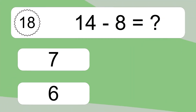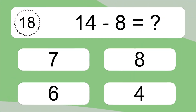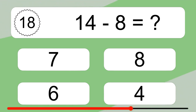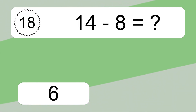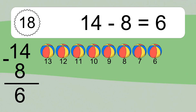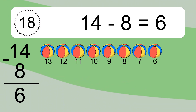14 minus 8 equals what? 14 minus 8 equals 6. Let's count it: 13, 12, 11, 10, 9, 8, 7, 6.